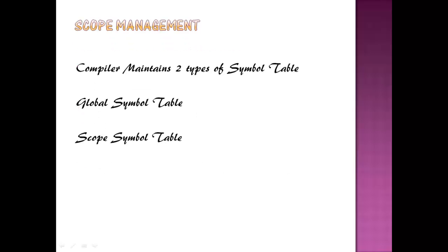Scope management: Compiler maintains two types of Symbol Table. They are Global Symbol Table and Scope Symbol Table. What is Global Symbol Table? Global Symbol Table means identifier and its relevant information are accessed by all the procedures within the scope. Global Symbol Table is the parent table.